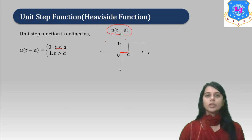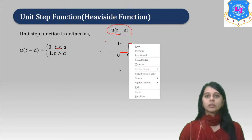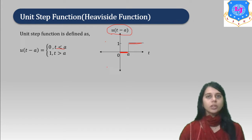In 0 to a, this function value is 0, and in the region greater than a, the function value is 1. This is the graph of the Unit Step function.